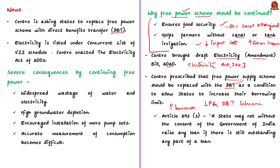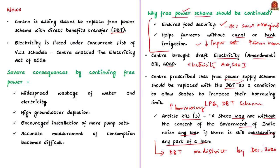Article 293 Clause 3 says that a state may not, without the consent of the Government of India, raise any loan if there is still an outstanding part of a loan. Using this provision, the central government asked state governments to introduce DBT in at least one district by December 2020, with a full rollout from the next financial year. This led to widespread protest and criticism from chief ministers and farmers' unions across the country.